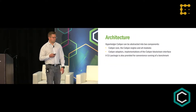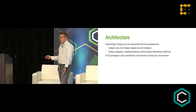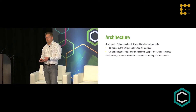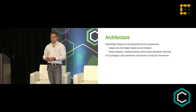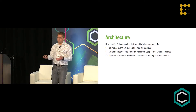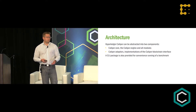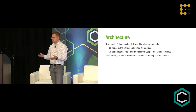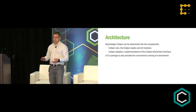The architecture can be broken into two components. We have the Caliper core, which is the engine and all the modules. And then we have these adapters. We have adapters for the Hyperledger components, and we provide an interface you can follow to supply your own adapter for any other system. We also give you a CLI package for convenience of running a benchmark — we're trying to make it as easy as possible to test different blockchain systems and get performance metrics.